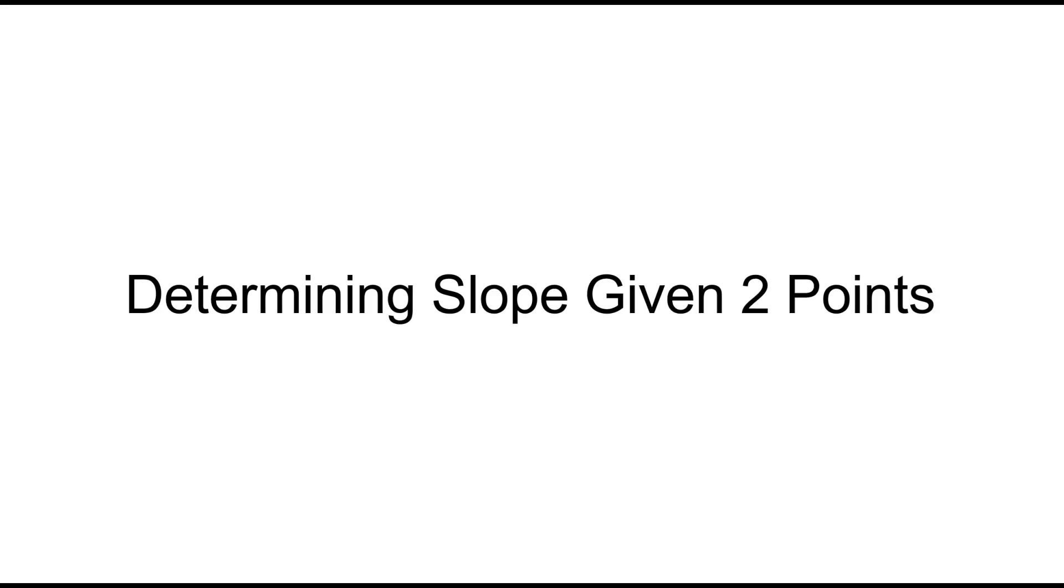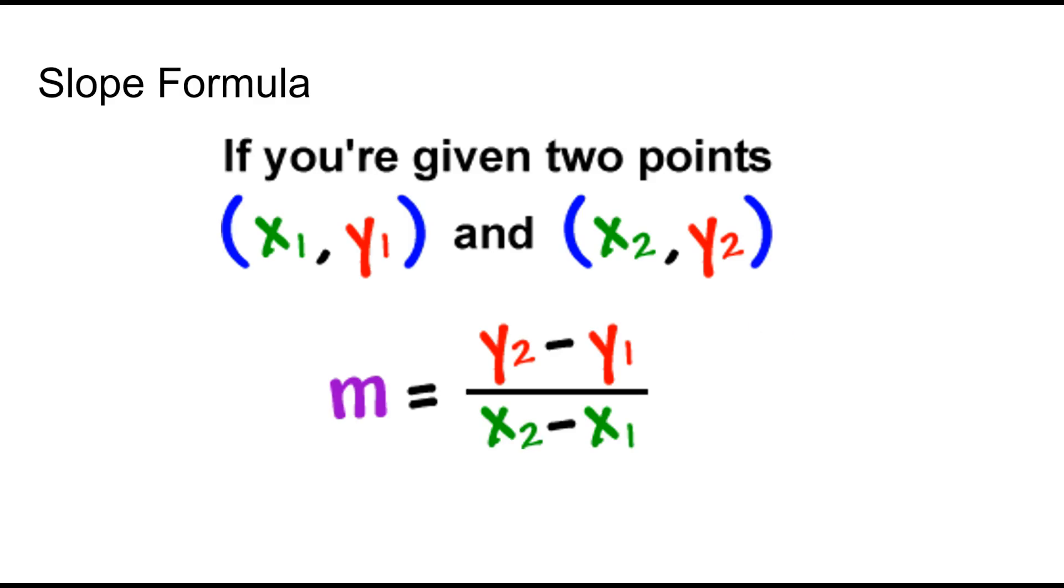Now what if I just give you two ordered pairs and I don't give you the graph? Now you could certainly graph it if you wanted to but we're going to introduce a formula so that we don't have to graph it every time. When you're given two points you use the formula m equals y2 minus y1 over x2 minus x1. You'll see me in the videos always start the formula like this. This is the best way not to drop any negatives.